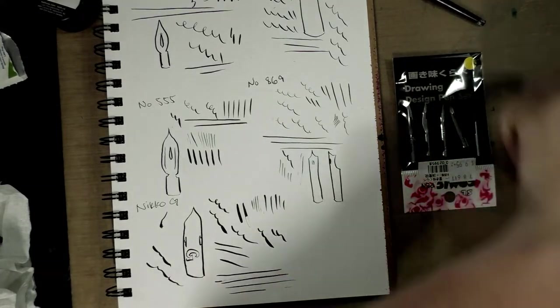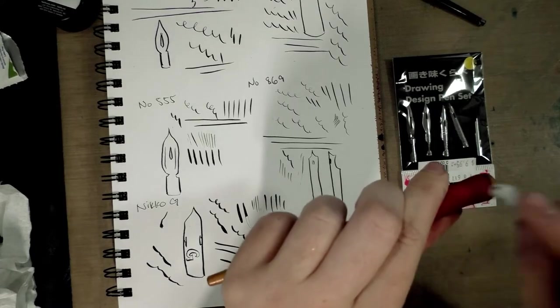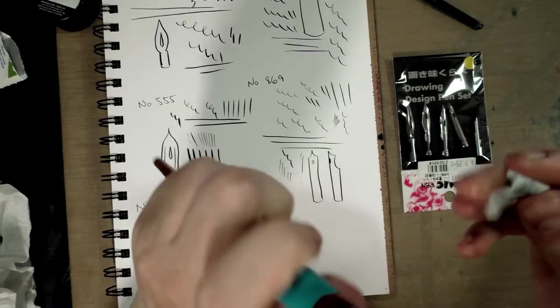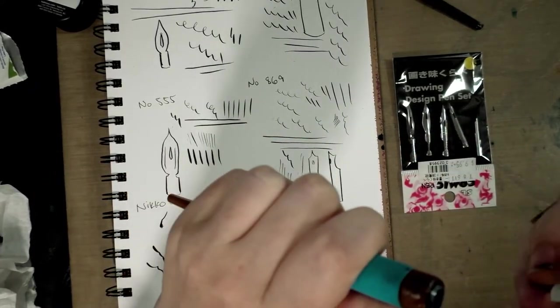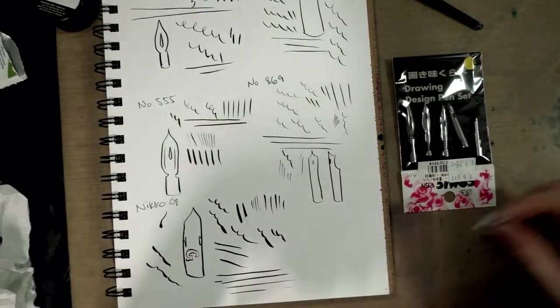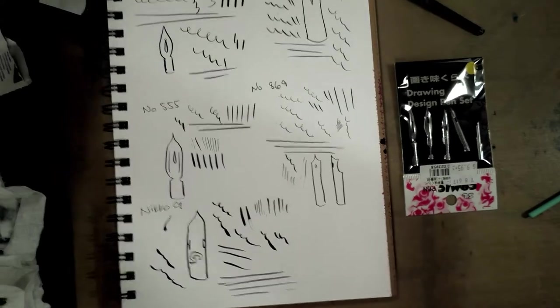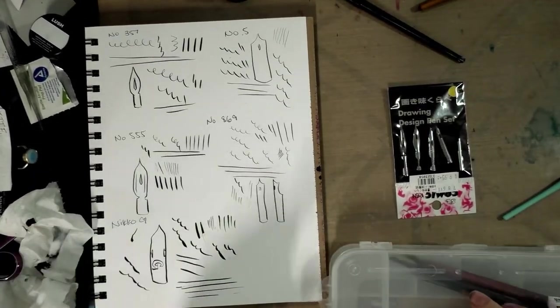If you are interested in this set, I hopefully will have a link to it in the description below. But sometimes Deleter nibs are not sold in the US the way they are in Japan. In fact, often Deleter and Nico nibs are not sold in the US the way they are in Japan. So I will do my best. If I can't find this set, I will do my best to recreate it so you guys can get your own if you are so interested.